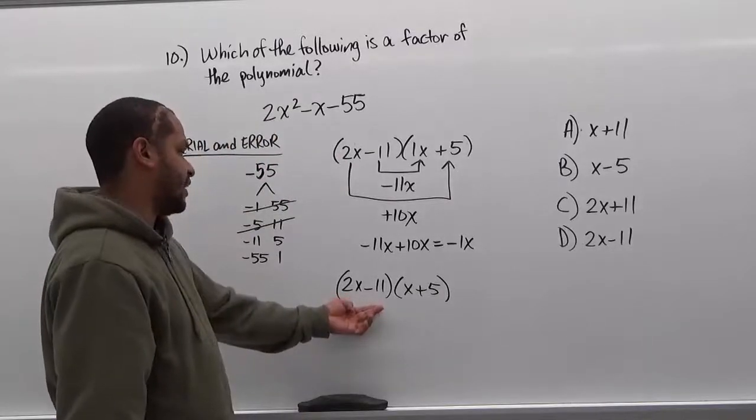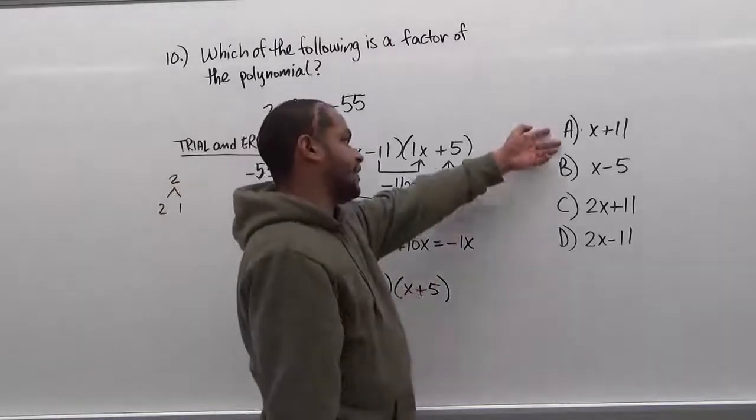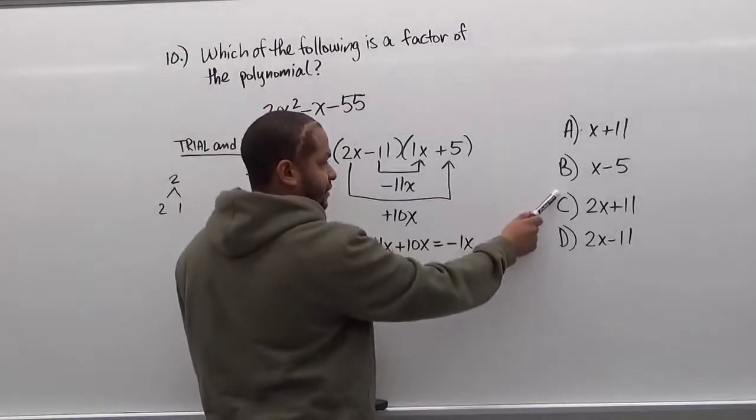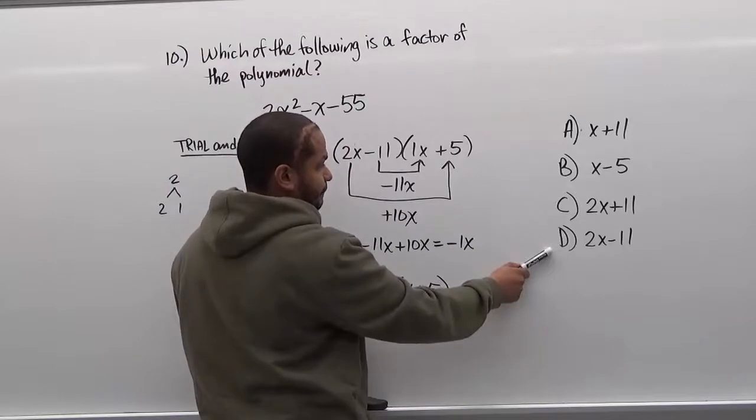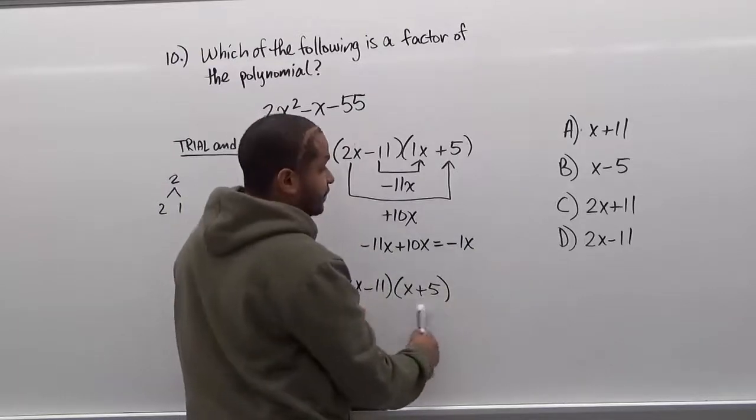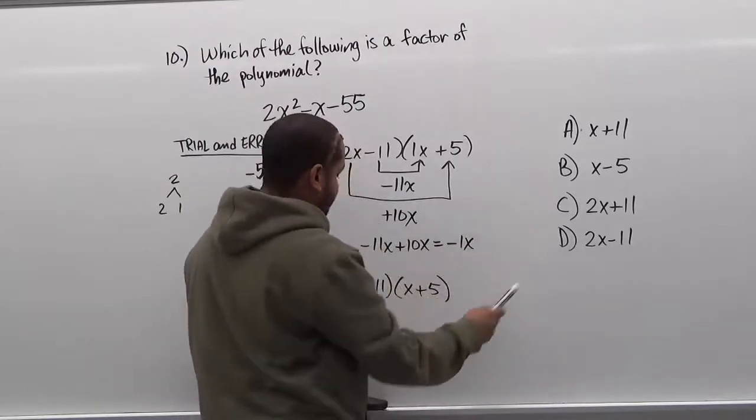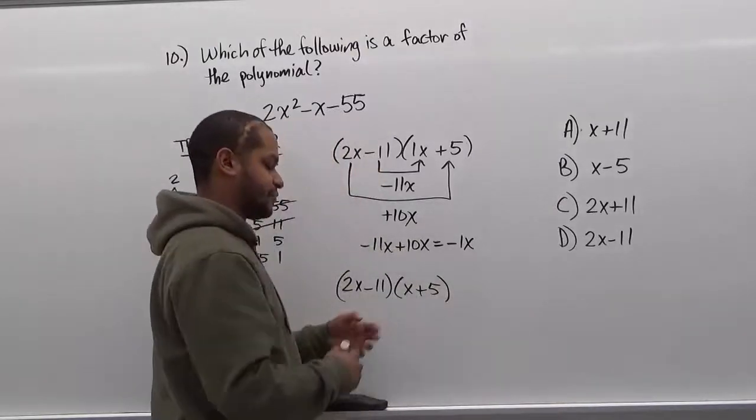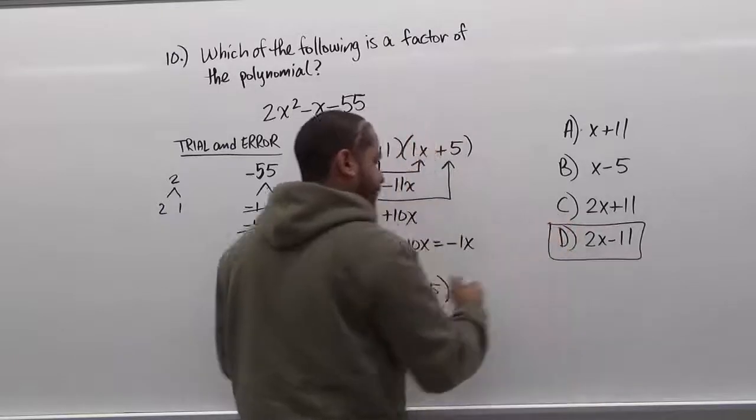Now we just have to match them to the correct solution. We'll take the first factor and compare them to every answer here. 2x minus 11 isn't A, it isn't B, it isn't C, but it is D. And as we can see, the second factor is not on this list at all. But our answer for this is actually D because 2x minus 11 is one of our solutions. So here's our solution for it.